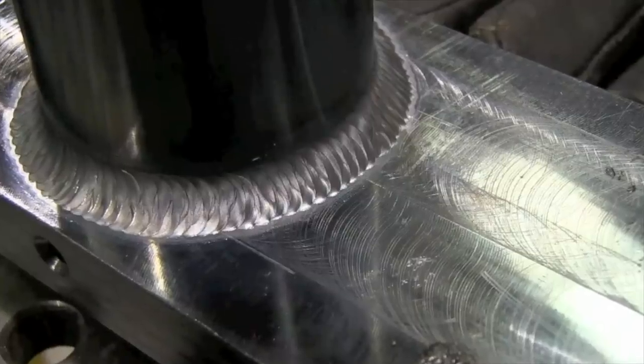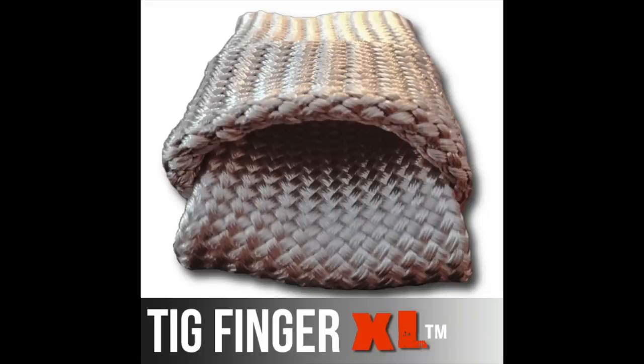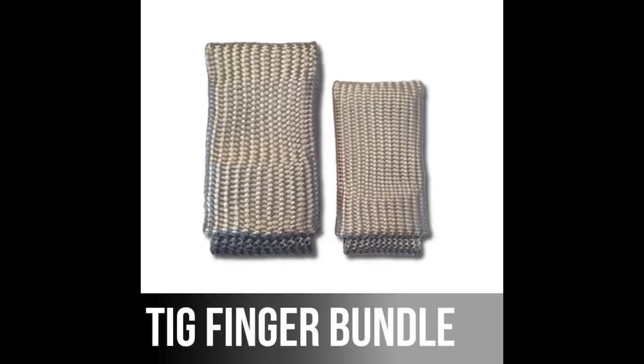So that's the TIG finger and the TIG finger XL. The XL is just bigger and usually two fingers can slip in the XL and it's thicker. I also have them bundled. You can save a little bit if you buy one of each.